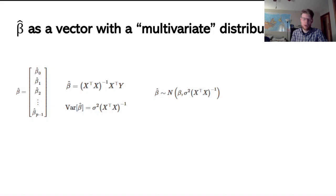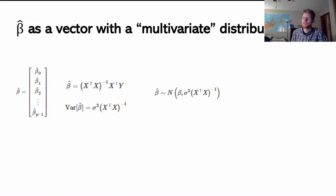The variance of beta hat can be represented by sigma-squared times the inverse of X-transpose times X. We're trusting that properties of multivariate distributions, if we run through the calculation, this is the expression we arrive at. Here sigma-squared is the variance of the residuals — the average squared residual — times this expression.